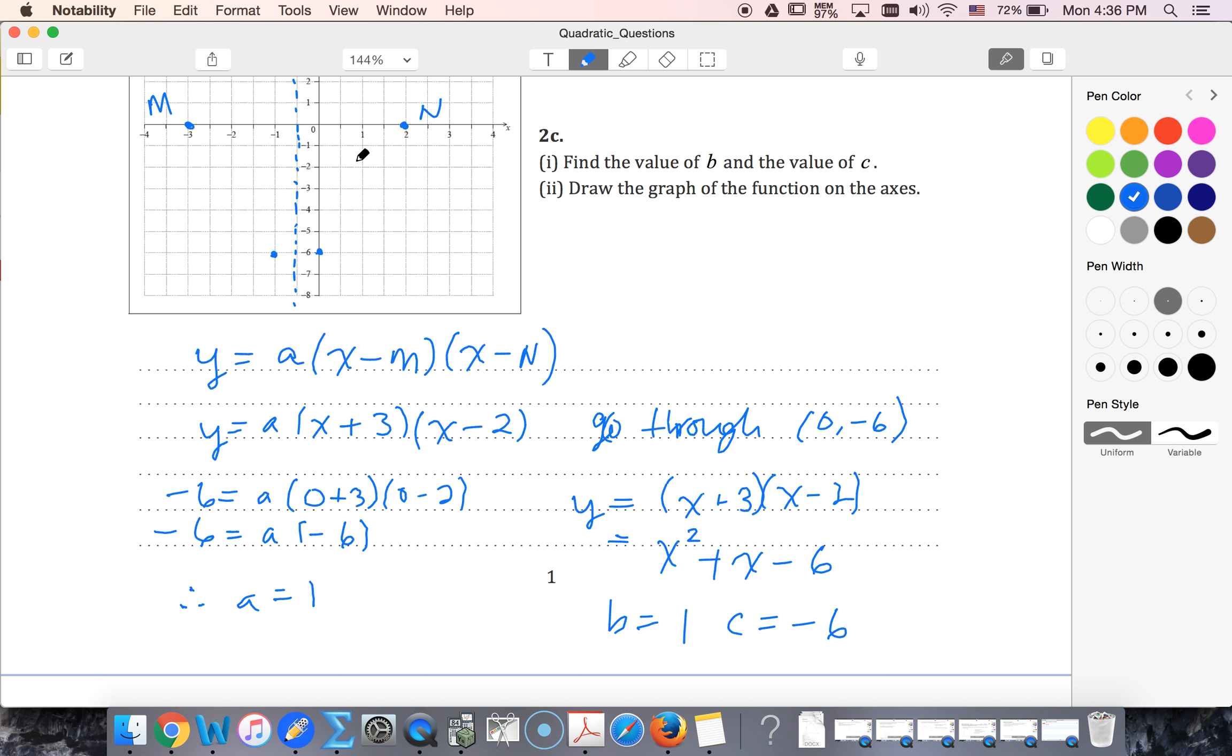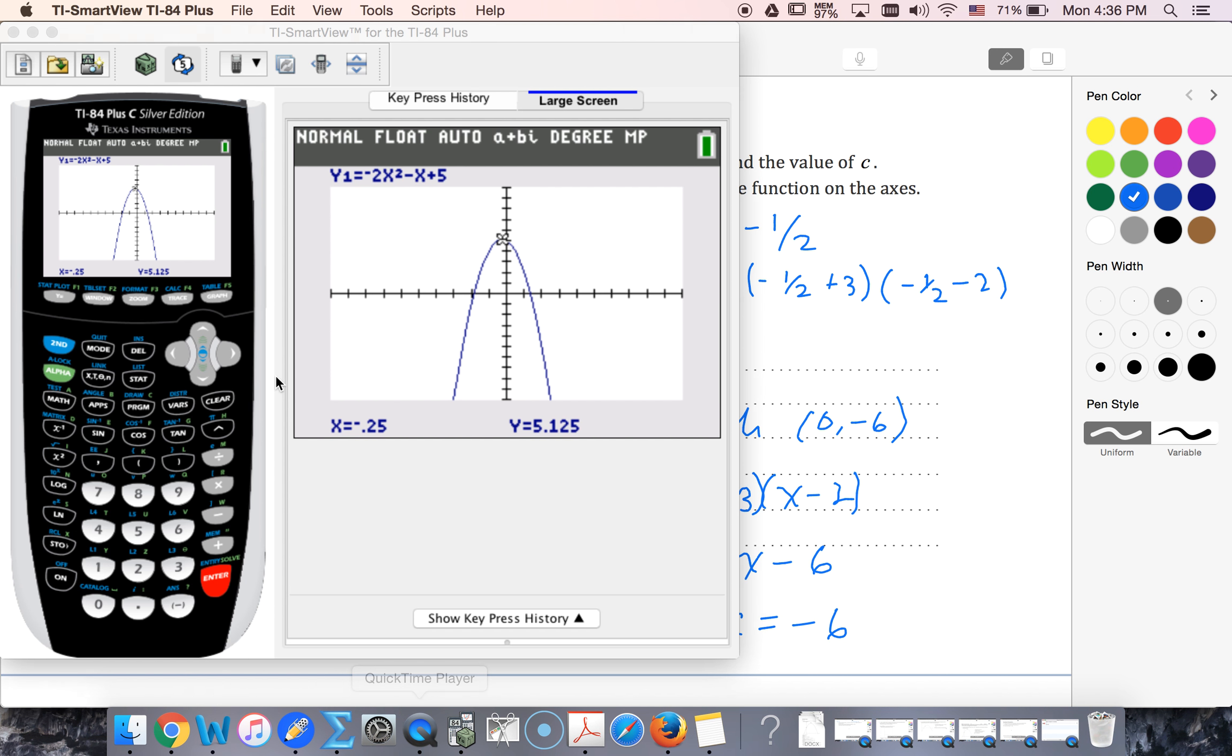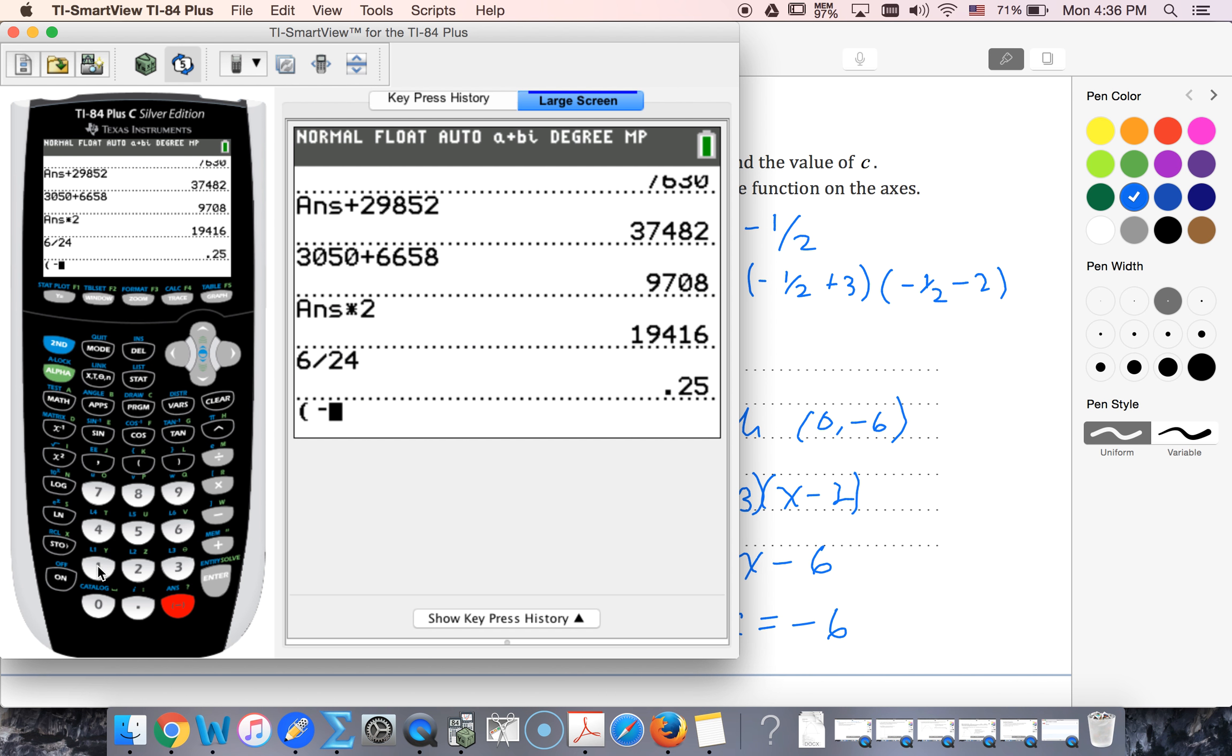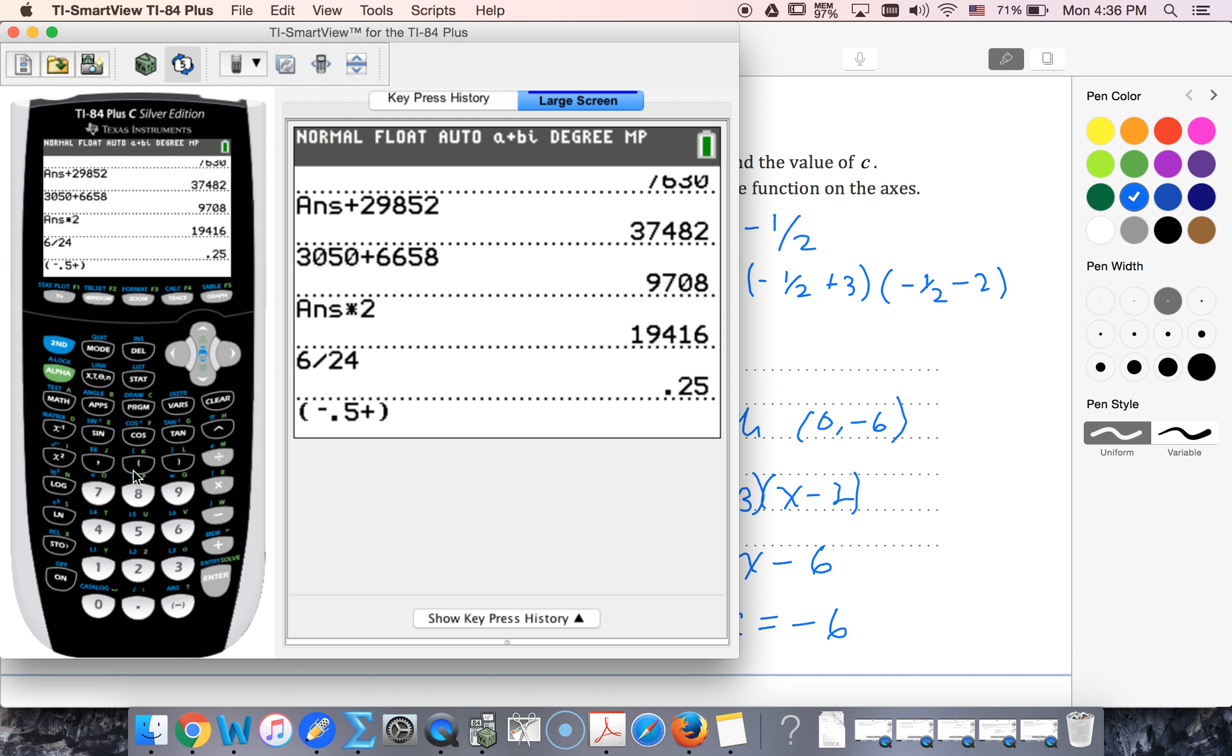So when x is negative a half, my y value is going to be one times negative a half plus three times negative a half minus two. That is going to give me—so I have negative a half plus three, times negative a half minus two. That's going to give me my y value: negative six point two five.